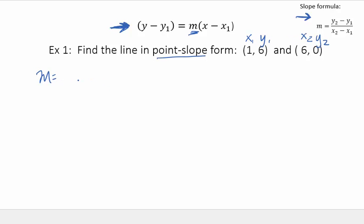All right, so if I plug those values into my slope formula, I say 0 minus 6 over 6 minus 1. I get negative 6 over 5. That's my slope. So now I know what I plug into the formula for m. Now, for x1 and y1, I can use this point or I can use this point. So there's two possible solutions for this problem. Let's do this one first.